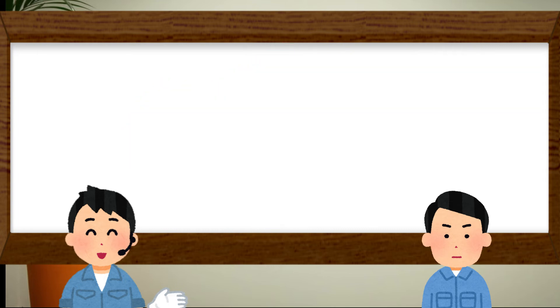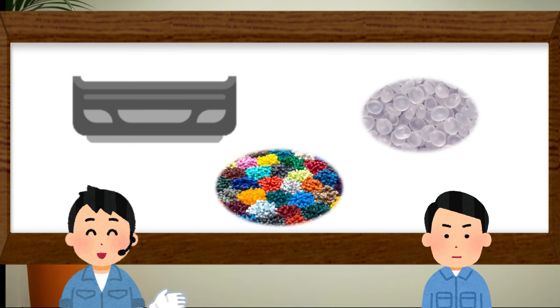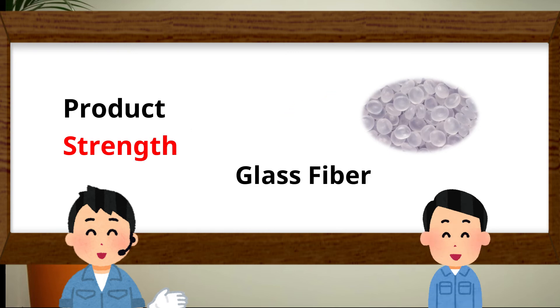By the way, car bumper is also made by polypropylene, but it is not transparent. It is colored for the product design. And to increase product strength, grass fiber is added to the material. Even the same polypropylene material, there are many kinds.